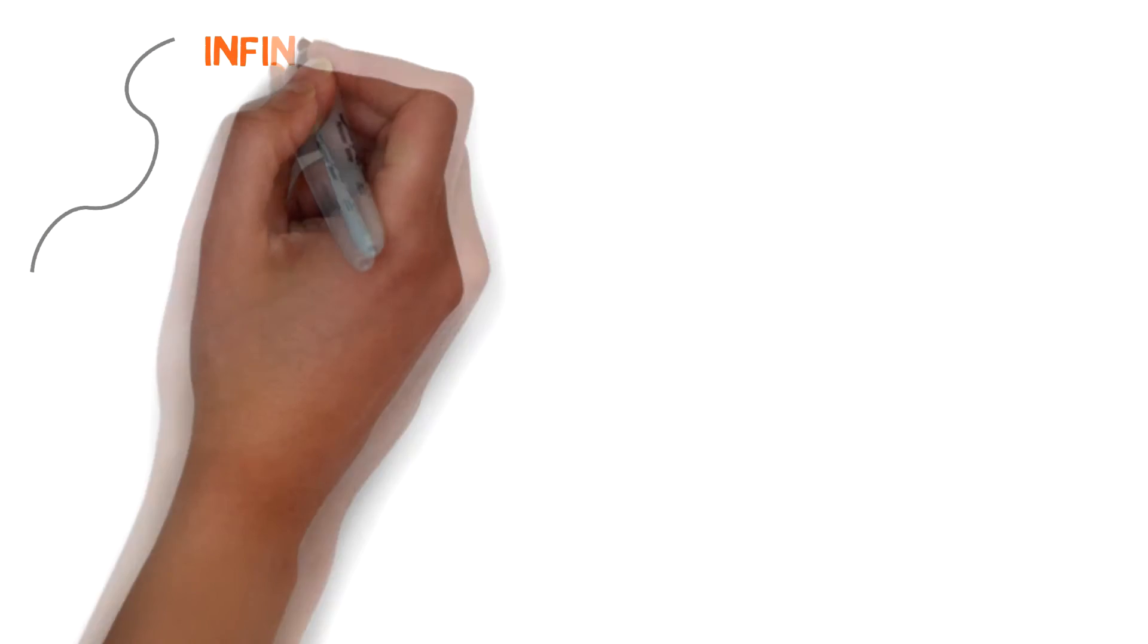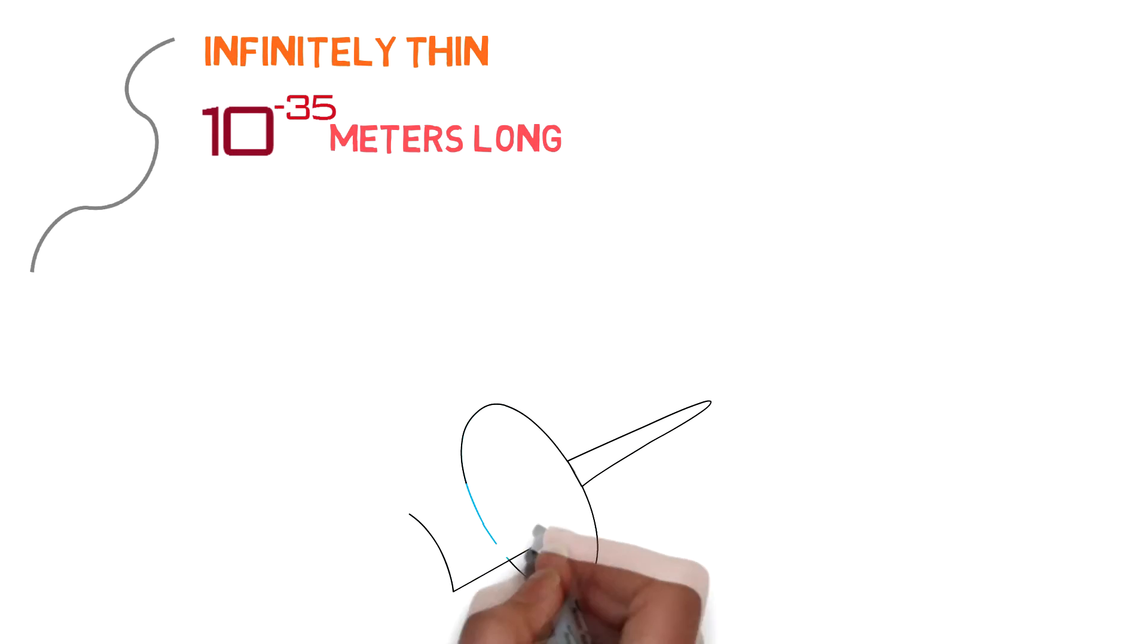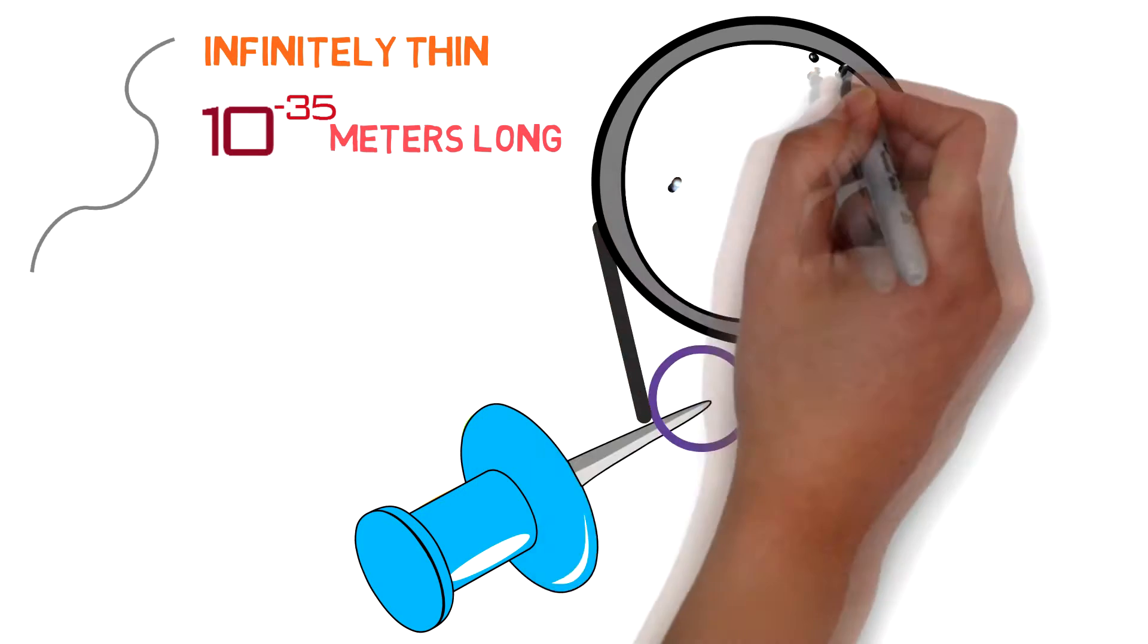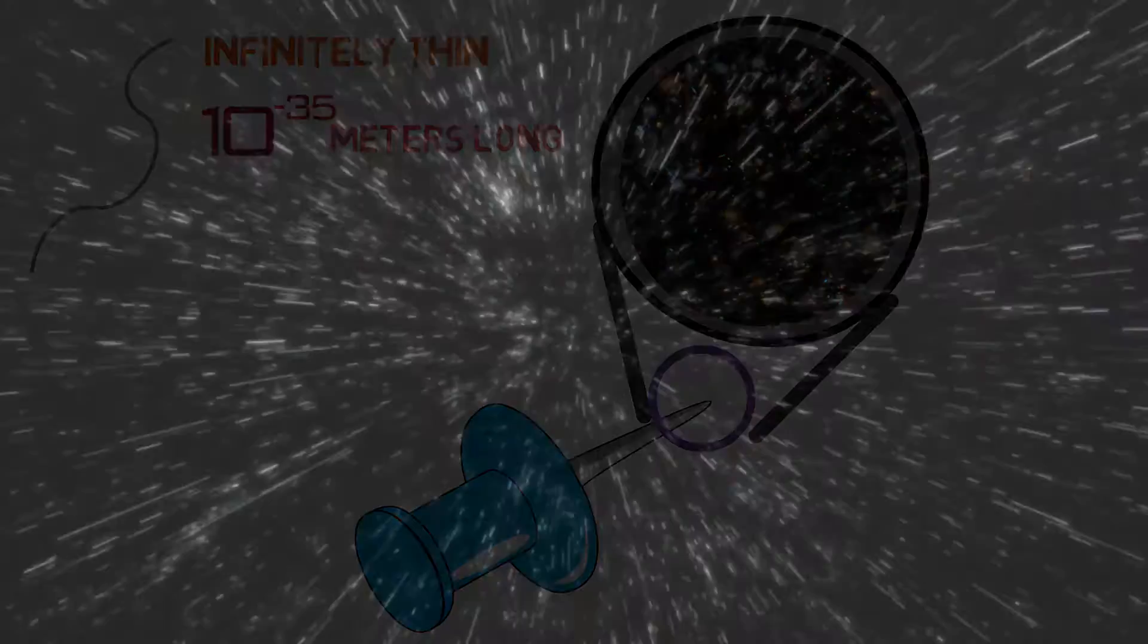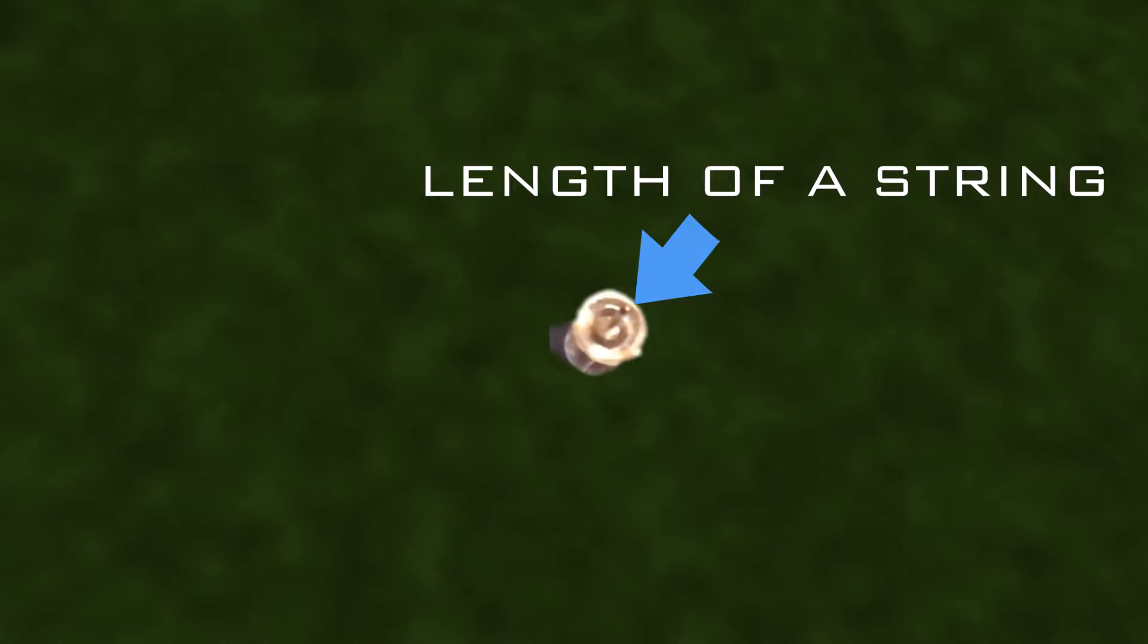Strings are extremely small one-dimensional objects that are infinitely thin and have an incredibly small length of 10 to the negative 35th meters. This may be a little hard to visualize, so let's put this into perspective. If we were to take the head of a pin and magnified it to the size of the observable universe, and then placed another pin inside that universe-sized pin, then the head of the new pin would be the length of a string.